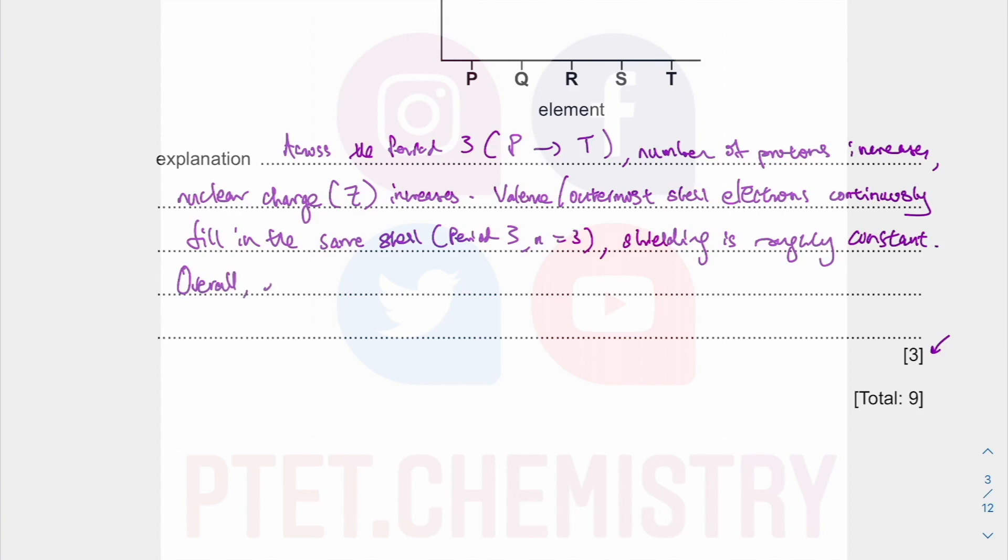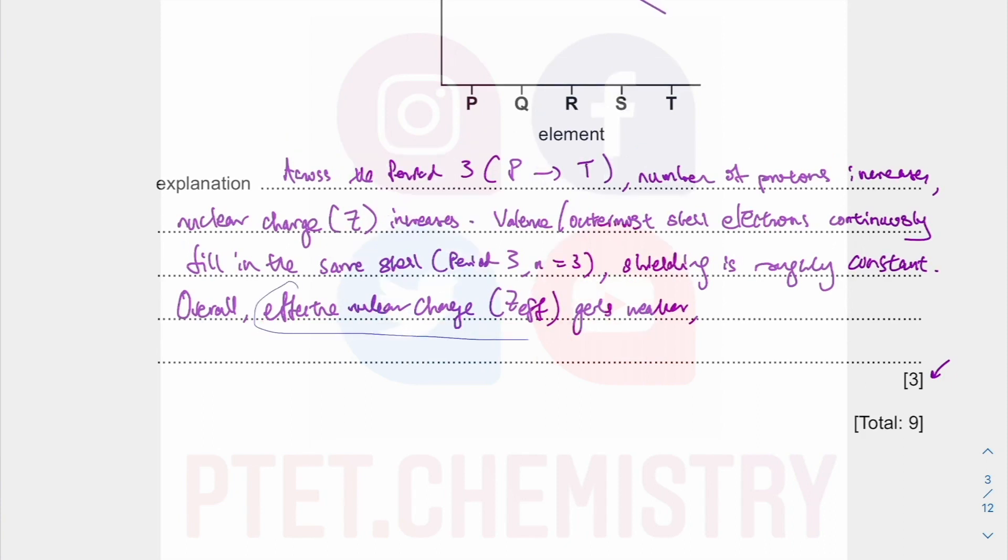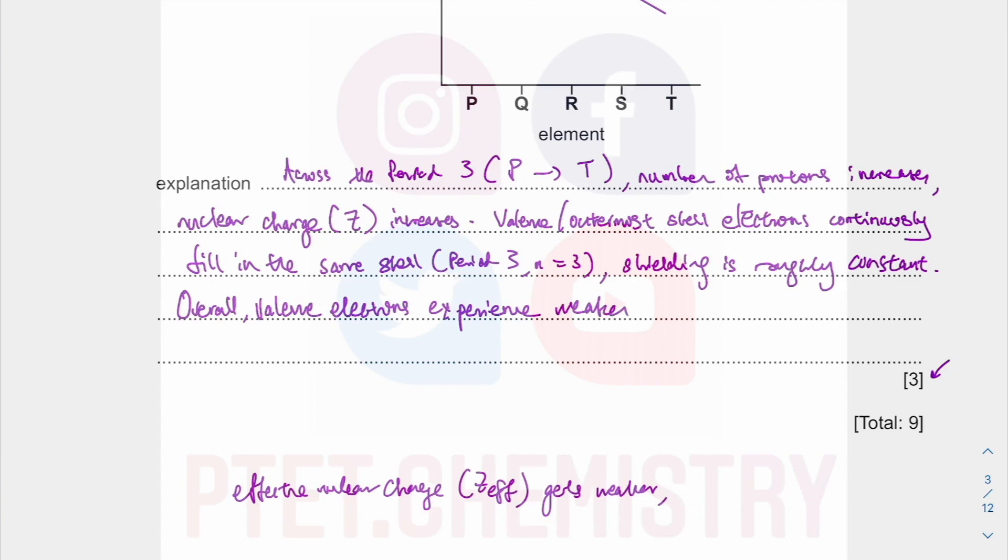Overall, I can talk about the effective nuclear charge. In reality, I should have just used Z-effective as I've abbreviated in the previous section. But anyway, the effective nuclear charge gets weaker. Or basically, we can say the valence electrons. The valence electrons experience weaker effective nuclear charge. Then Z-effective across the period.